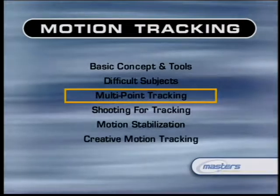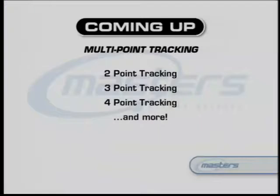So far we've limited our discussion to tracking a single point within the frame, which is very handy but really only useful for inserting elements into shots with simple pan and tilt camera motion. Tracking additional points opens up possibilities and allows us to track even more complicated camera motions. In addition to one-point tracking, there is generally two-point tracking, three-point tracking, and four-point tracking, although there are systems that go beyond that.